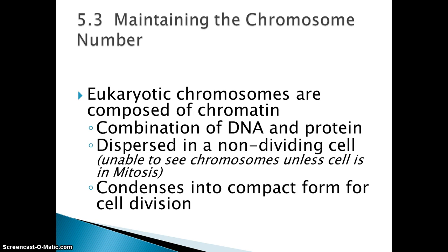Maintaining the chromosome number. Eukaryotic chromosomes are composed of chromatin, which is just the uncoiled, uncondensed form of your chromosomes. The two parts that make up chromatin are DNA and protein. They're dispersed in non-dividing cells and you can't see them with a microscope. They condense into a compact form for cell division — once the cell enters the M phase, that's when you can see the chromosomes; in interphase it's referred to as chromatin. This is eukaryotic chromosomes only, not prokaryotes — so this doesn't apply to bacteria. This is all other kingdoms of life: plant, animal, fungi, protist.